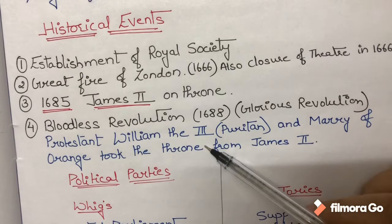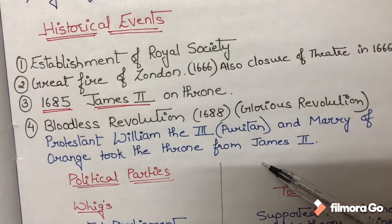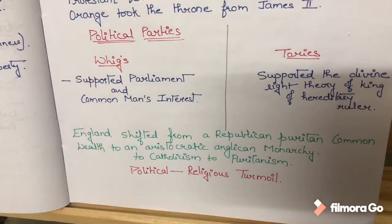Through this revolution, William III and Mary of Orange took the throne from James II. William III was a Puritan. So now England was ruled by William III.